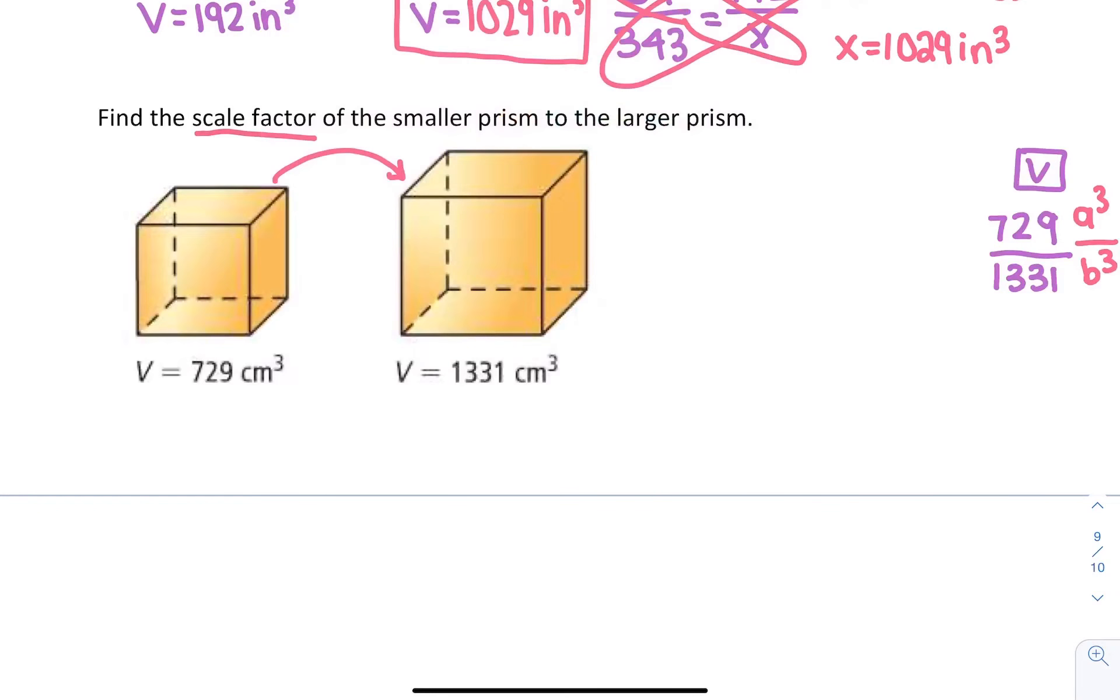To figure out the similarity or perimeter ratio, we need to figure out what a over b is. We're going to take the cube root of 729 over the cube root of 1331. We find out on our calculators that's 9 over 11.